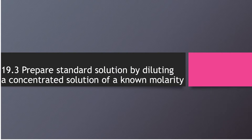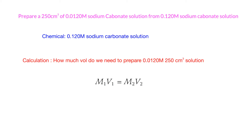We're going to talk about preparing a standard solution by diluting a concentrated solution of known molarity. This time we're going to prepare 250 cm³ of 0.012M sodium carbonate solution from a more concentrated sodium carbonate solution. You can see that this one is 0.12, and this one is 0.012.